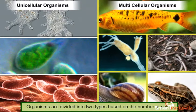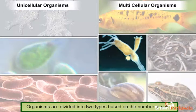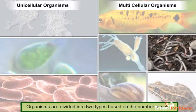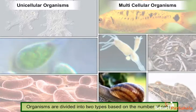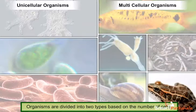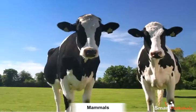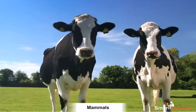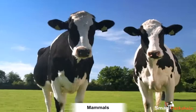Organisms which are made up of more than one cell are called multicellular organisms. Hydra, earthworm, snail, fish, frog, and mammals are some examples of multicellular organisms.